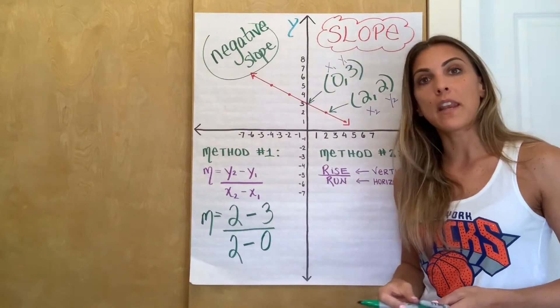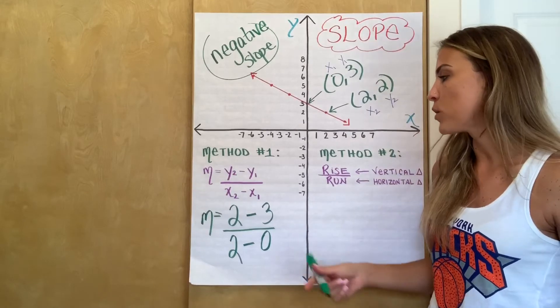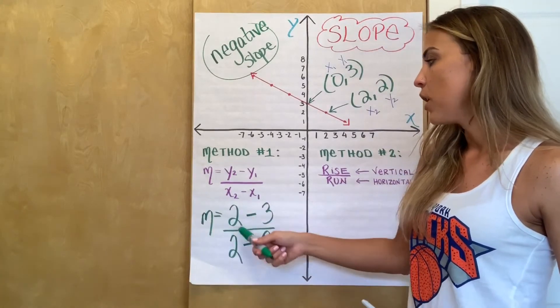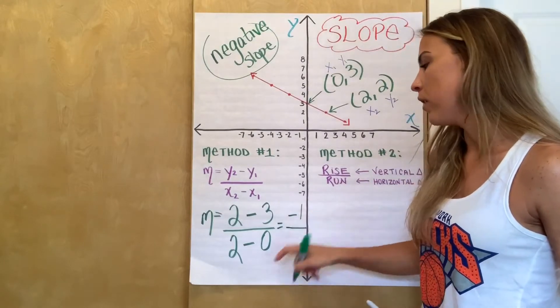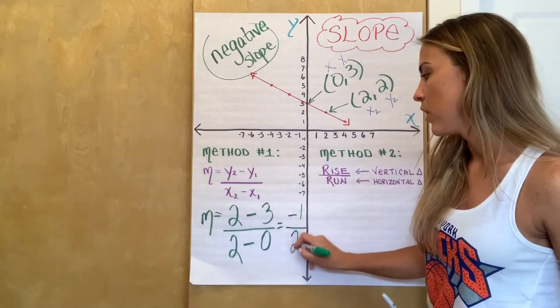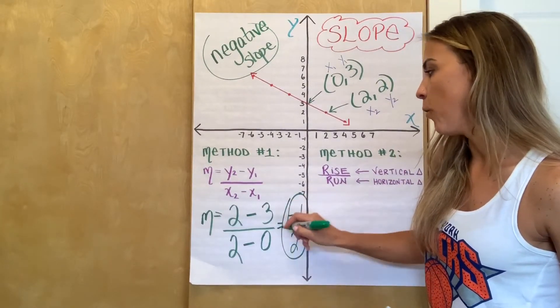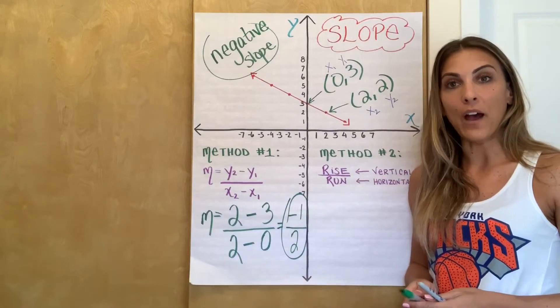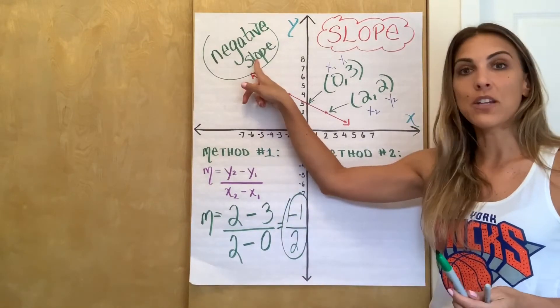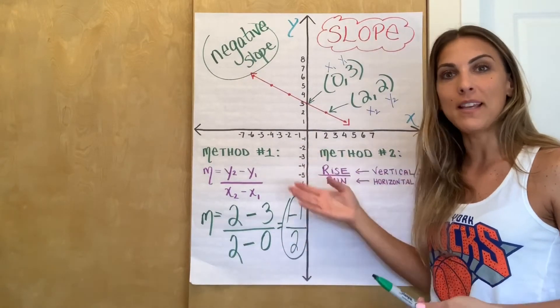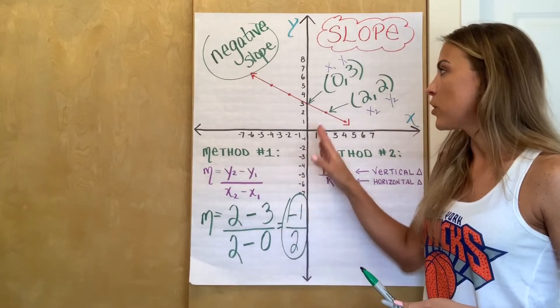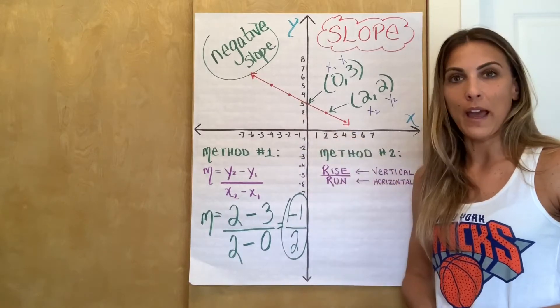So now that we've substituted, the next step is to actually perform the math. So let's simplify the numerator first. 2 minus 3 is negative 1 over 2 minus 0 is 2. So my slope is negative 1 half. And again, that checks out my annotation. It was supposed to be a negative number. It is. That doesn't mean I'm definitely right in what I got, but at least I know I got that part right. So the slope of this line would be negative 1 half. Okay?